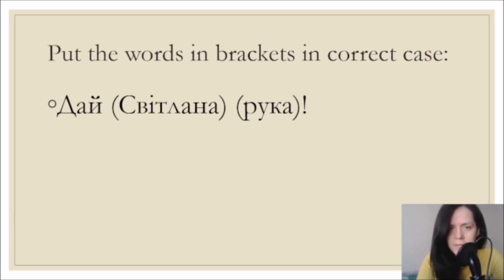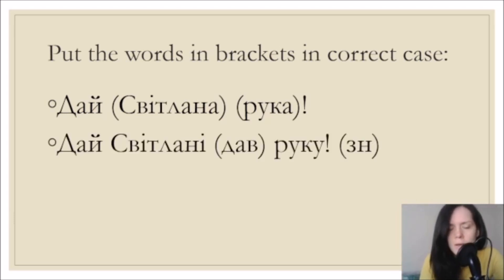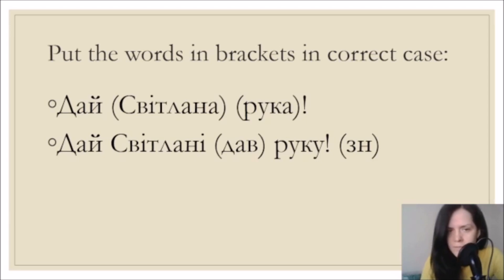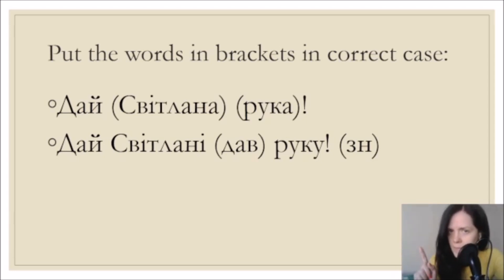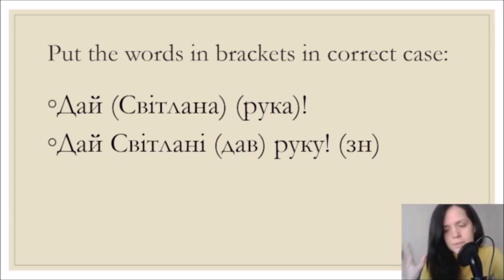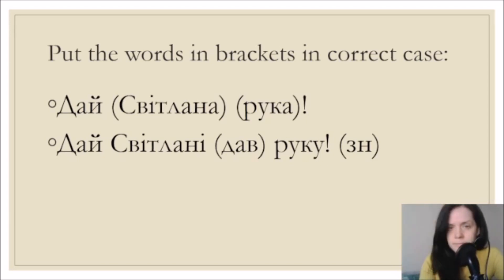The correct answer is: дай Світлані руку. Дай кому? Світлані - we used the feminine name Svetlana in dative case because she is the indirect object of the verb дай - give to whom? To Svetlana. But give what? A hand - the direct object goes in accusative case, знахідний відмінок. So дай Світлані руку is correct, and you scored one point.